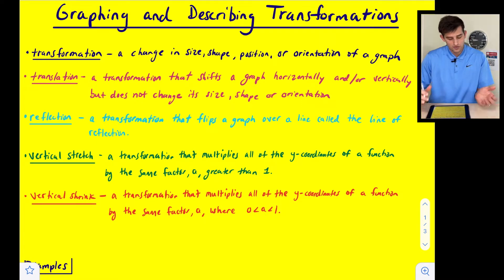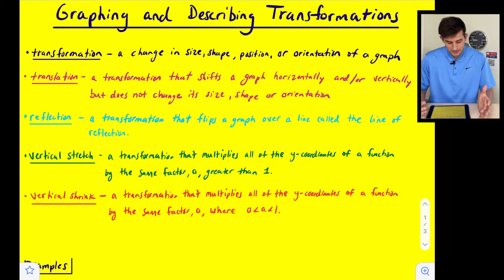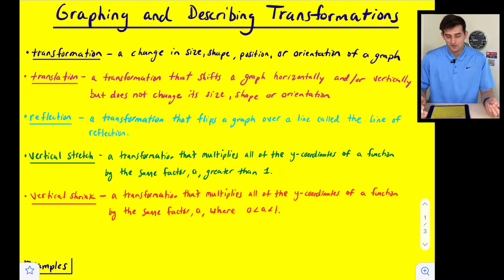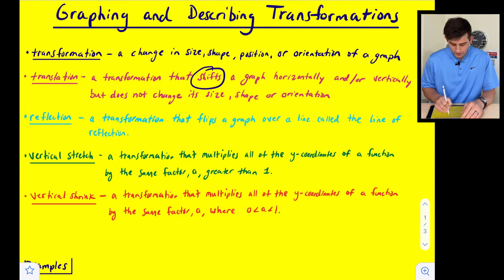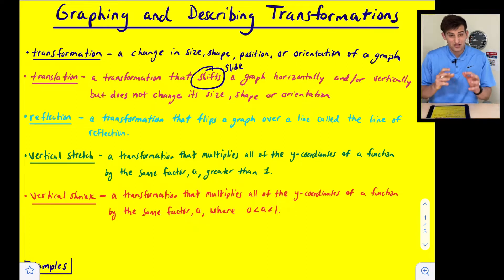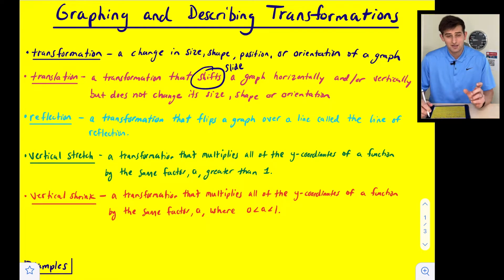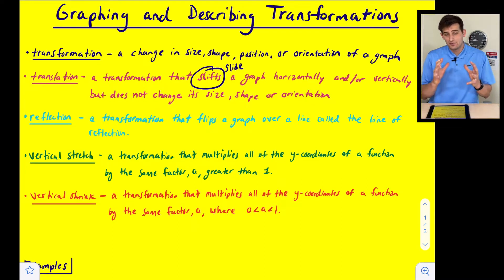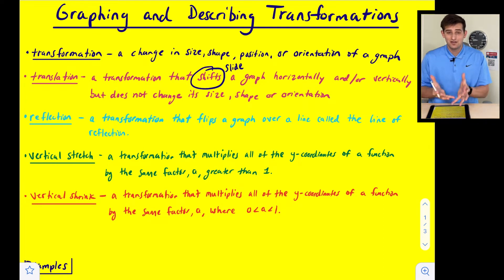We're going to see four transformations, and the first one is a translation. A translation sounds very similar to transformation, but a translation is a specific transformation — it shifts, or slides, a graph horizontally and/or vertically, but it does not change its size, shape, or orientation. So we could shift a graph left or right (horizontally) or up and down (vertically).